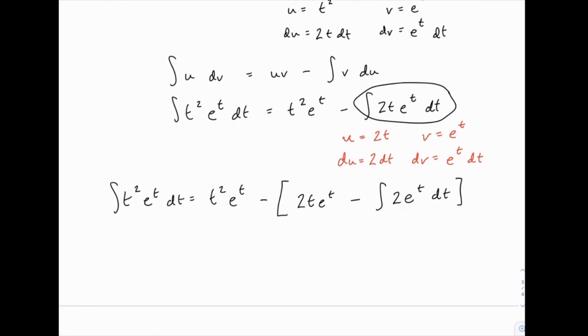So it might be helpful now to distribute. So I have t squared e to the t minus 2t e to the t plus the integral of 2e to the t dt.